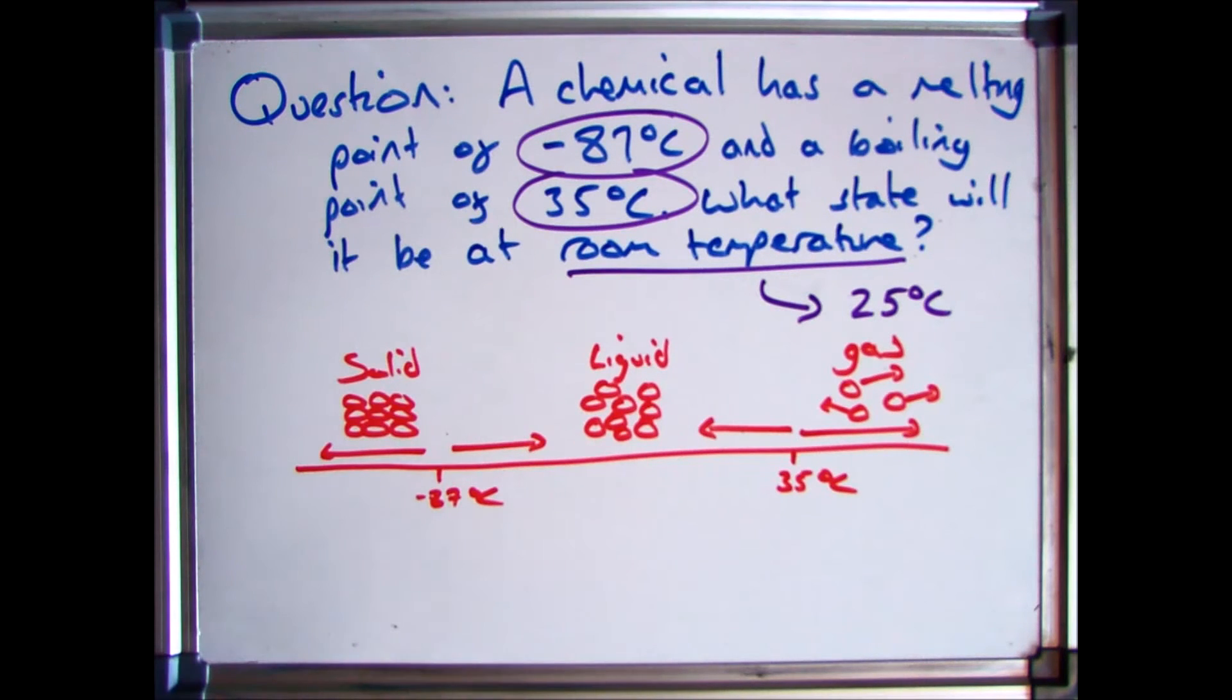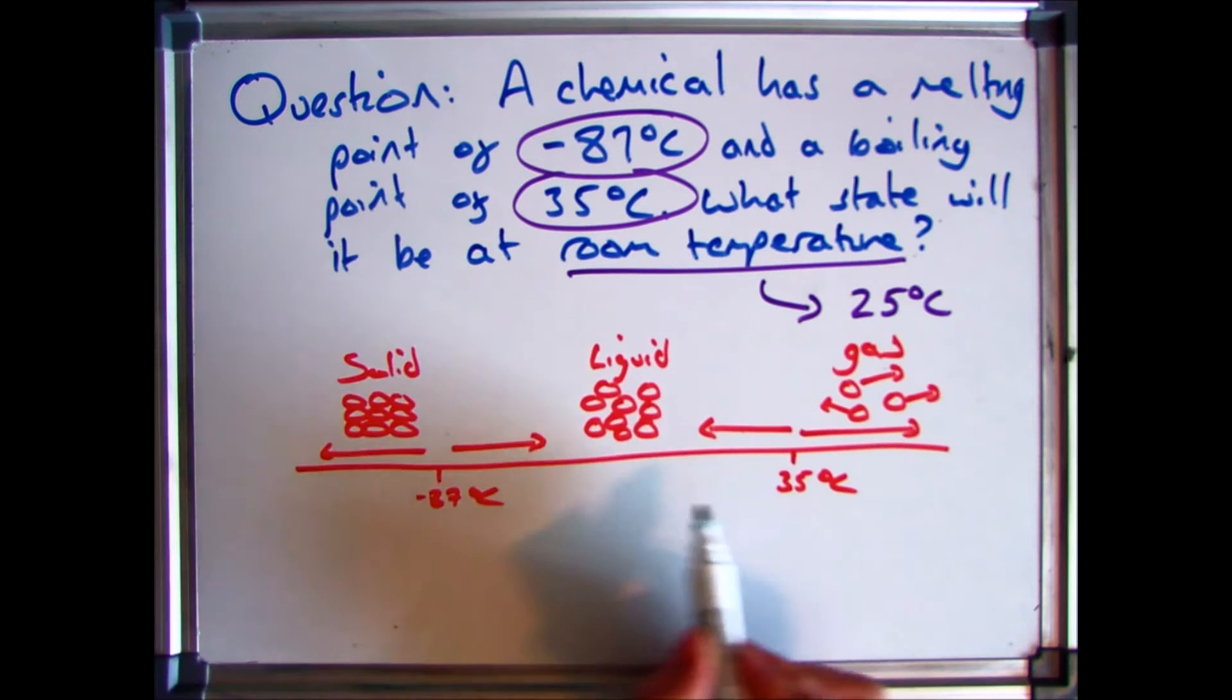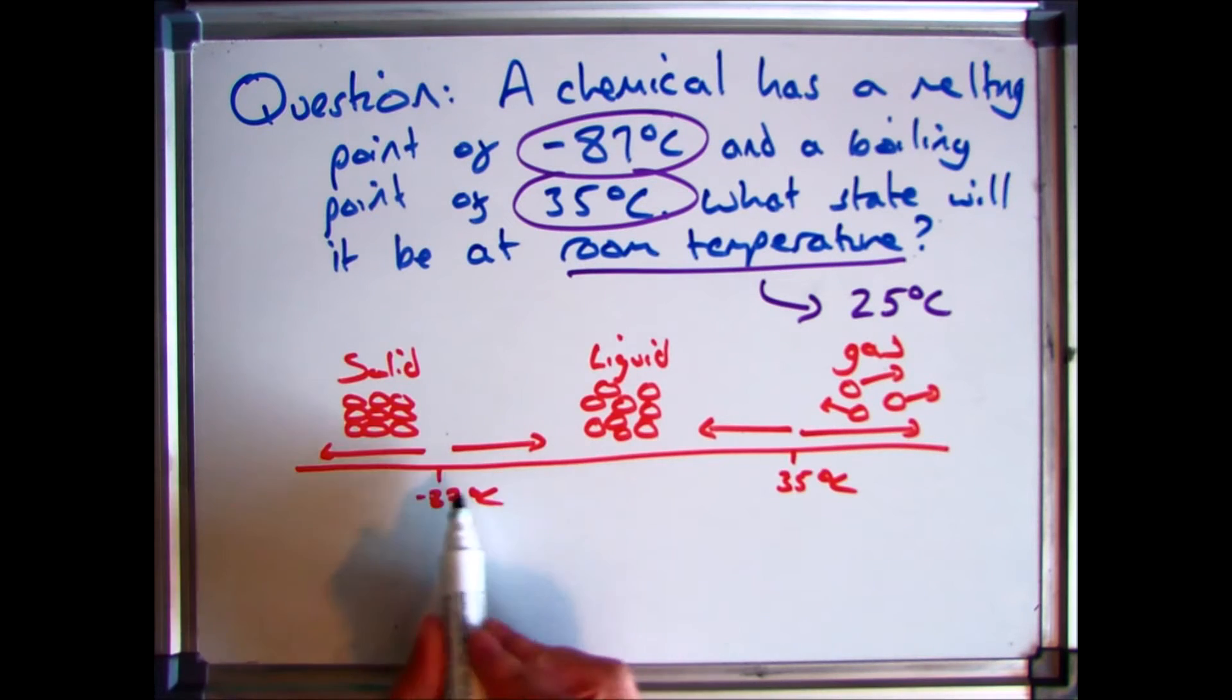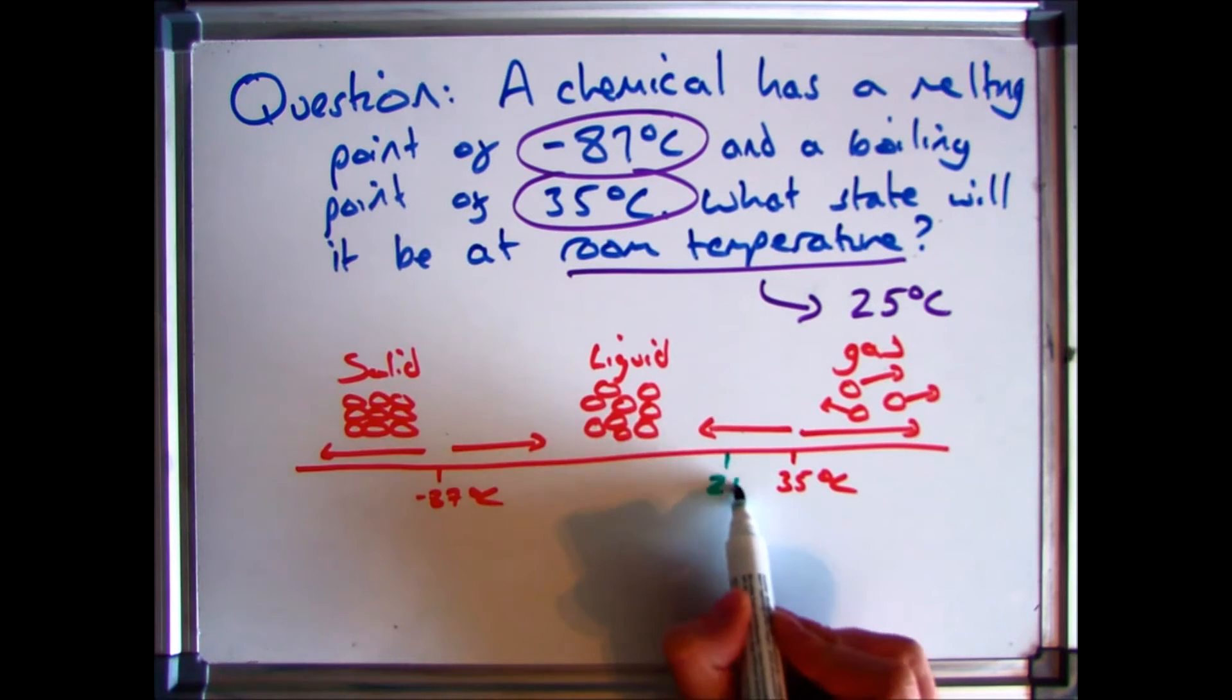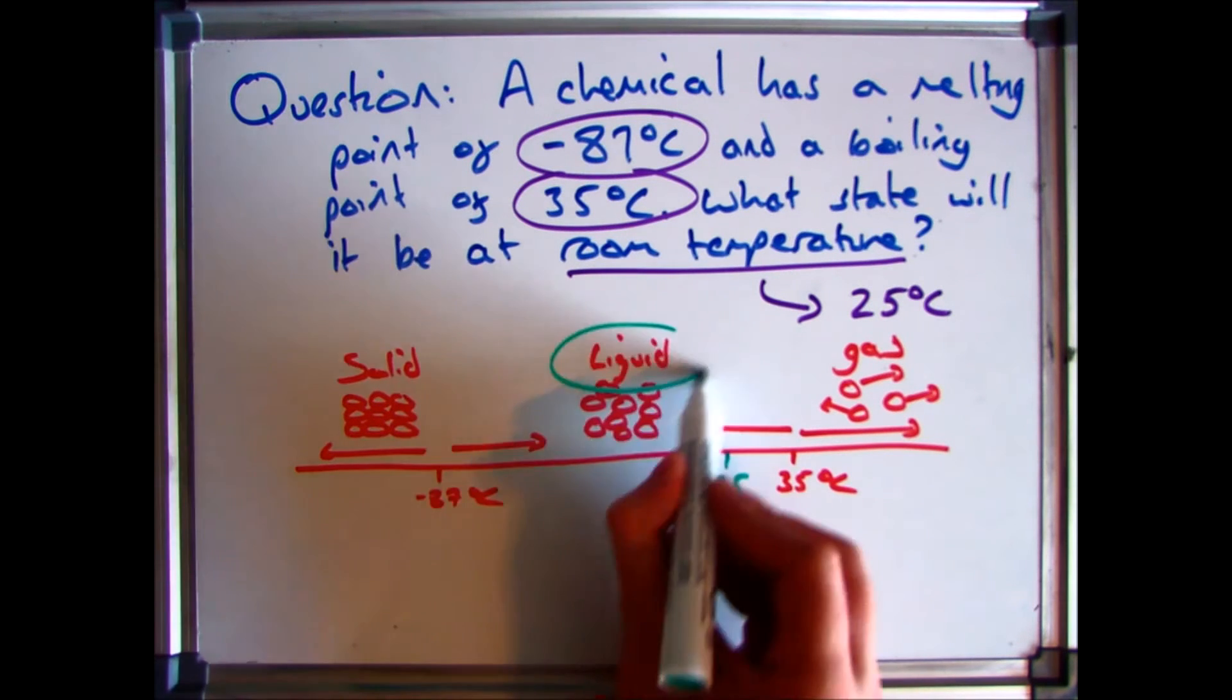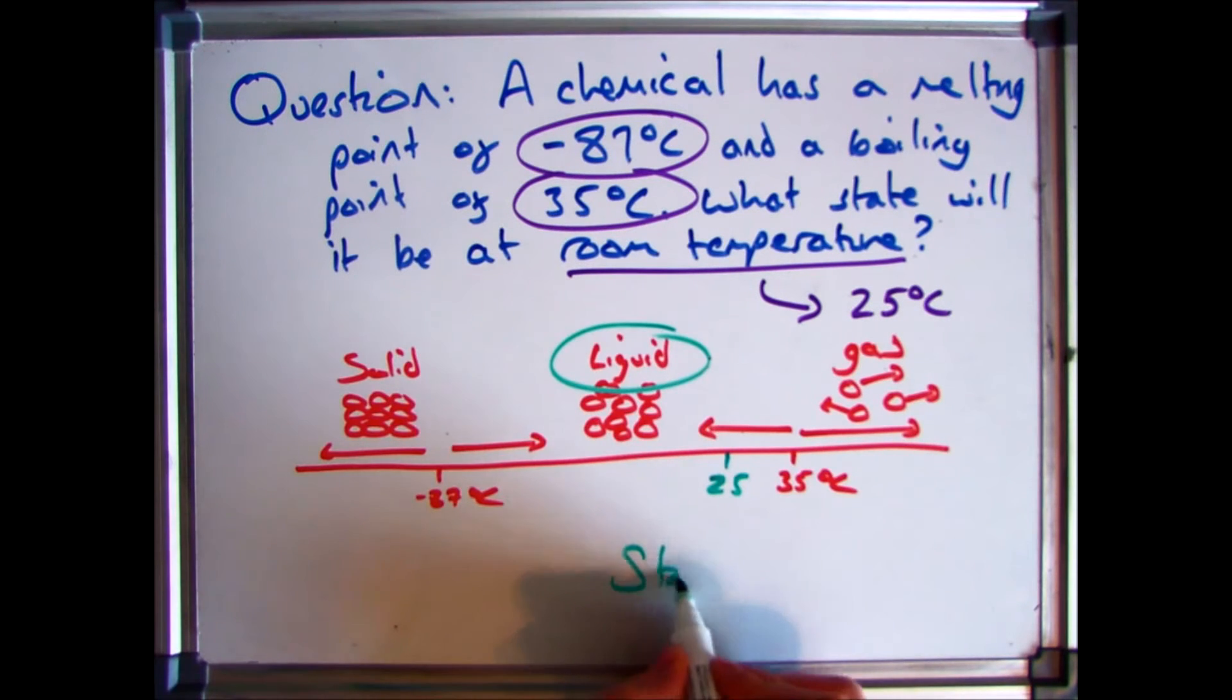Which means everything in between these two points is your liquid. So the final thing to do is to actually put in the information. So it's asking room temperature. So we say that's 25. So you need to find a point between here and here. So minus 87, 35, 25 is in between that. It's going to be around here. So I know that my state is going to be a liquid.